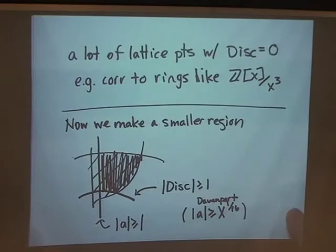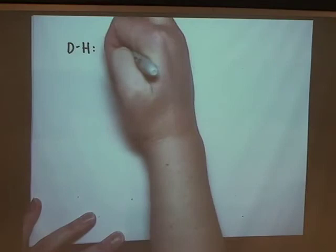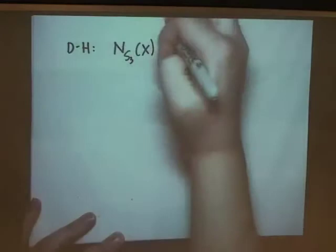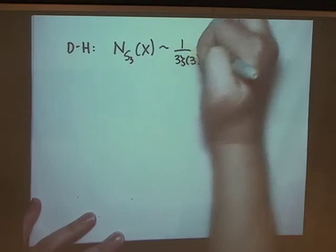So you got the parameterization, you've counted the orbits, and the last step is sieving for the points that actually correspond to maximal rings. You can tell whether an order is maximal by checking at each prime p one at a time, doing a sieve over each p — similar in spirit to a square-free sieve or Bjorn's close-point sieves.